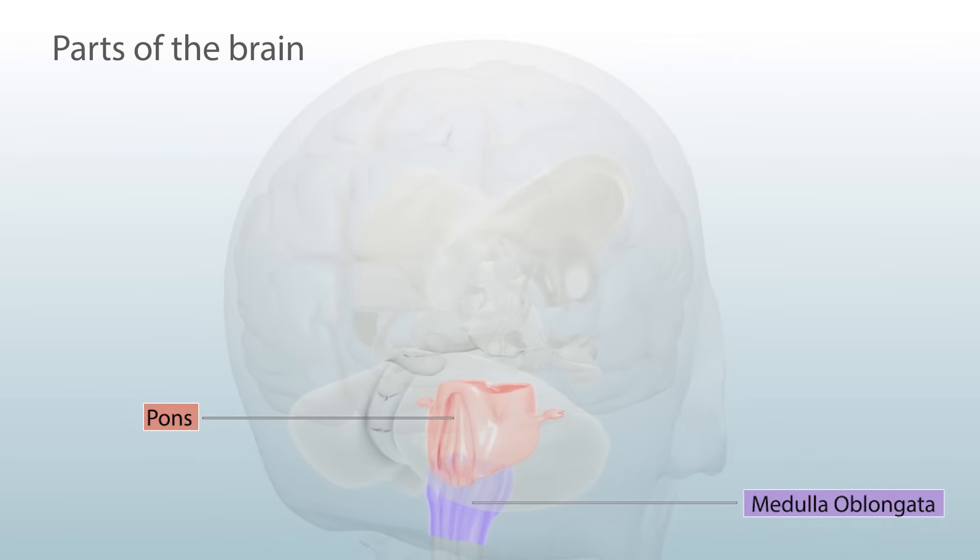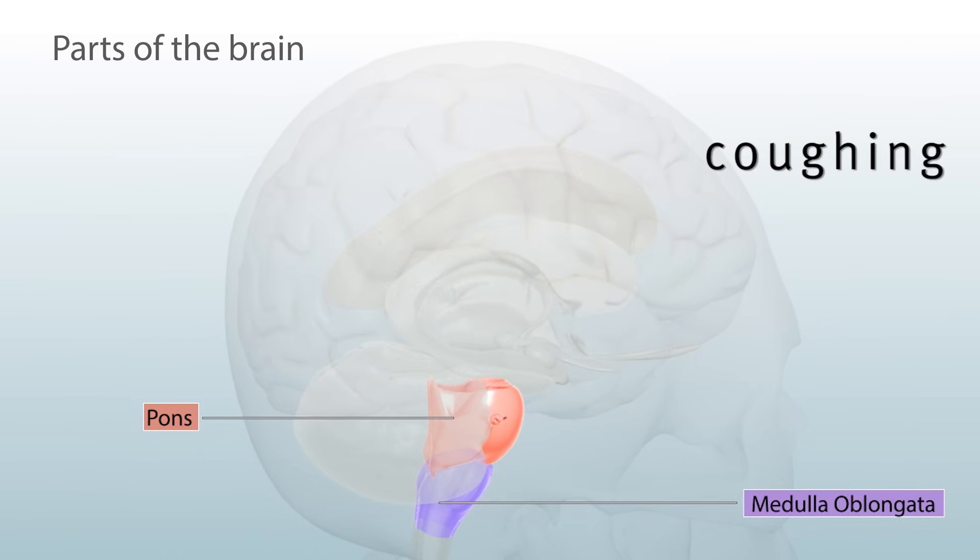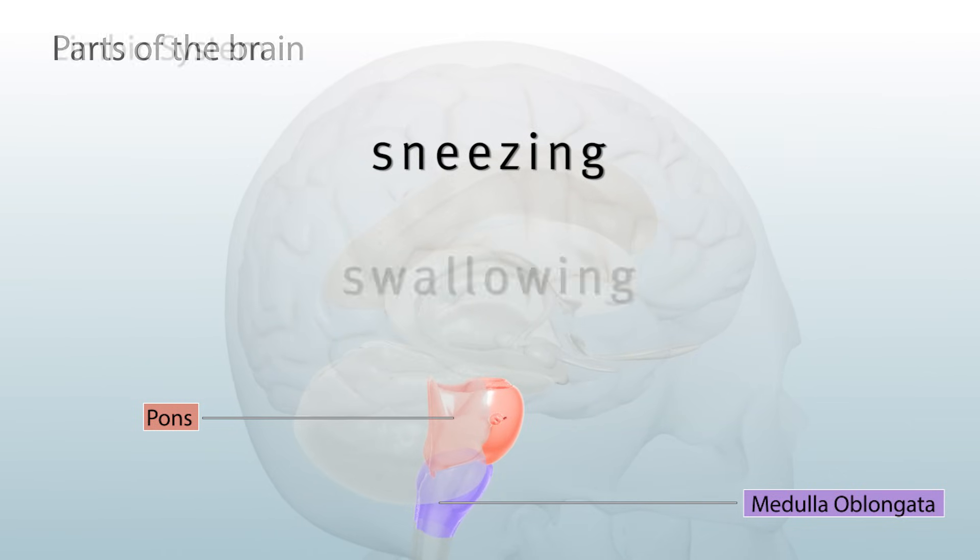And the medulla oblongata, which regulates our heart and other body reflexes like vomiting, coughing, sneezing, and swallowing.